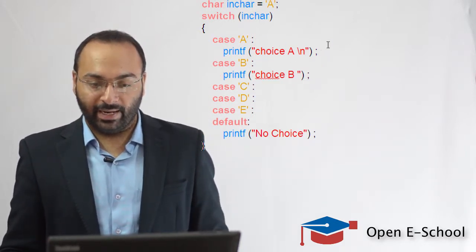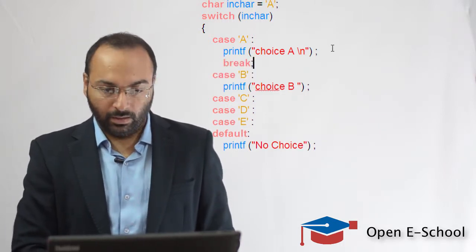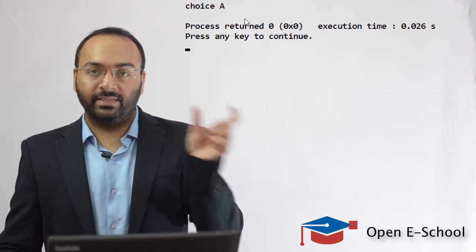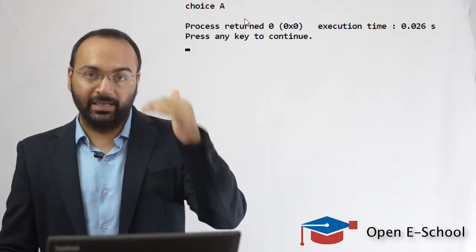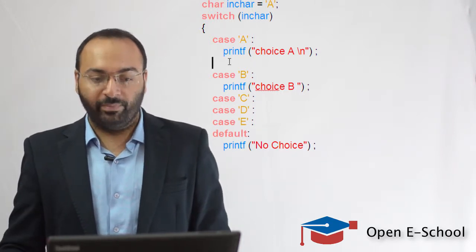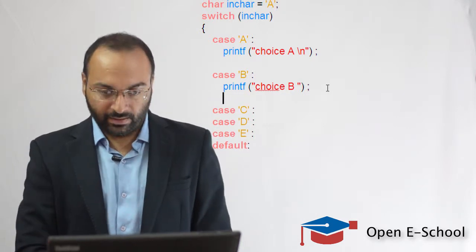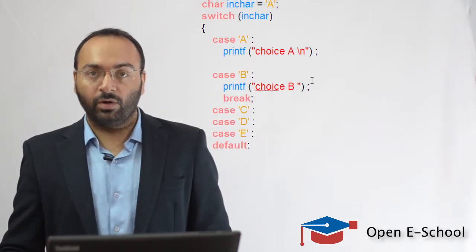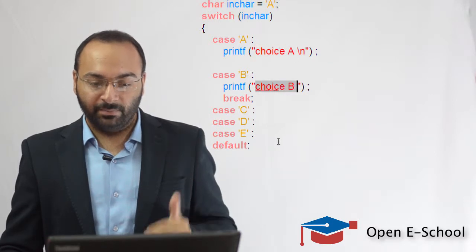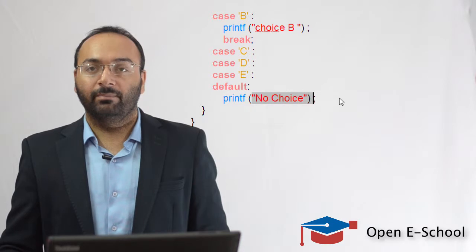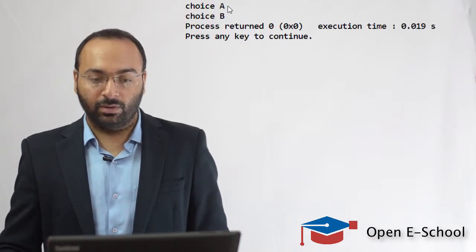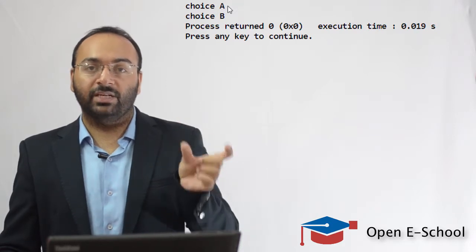Suppose we had a break statement in case A — then the output would have been only 'choice A', because after printing it, the program would break out of the switch. If instead there was no break in case A but there was a break in case B, then 'choice A' would be printed, and on the next line 'choice B' would be printed. The default case would not run because of the break statement in case B. Running this confirms: output is 'choice A' then 'choice B' on the next line.